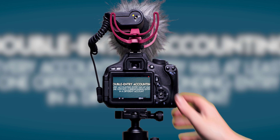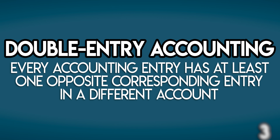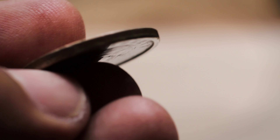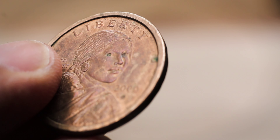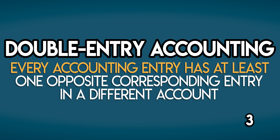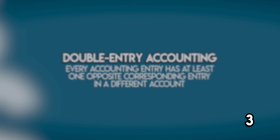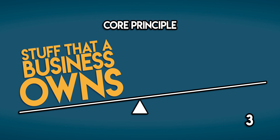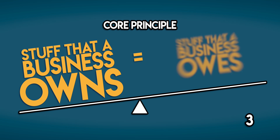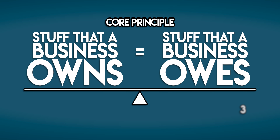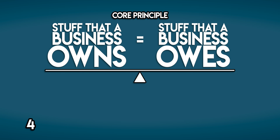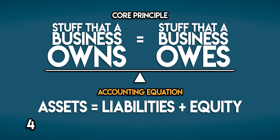A better way to record transactions is to use the double entry accounting method. In double entry accounting, there are two sides to every transaction. This means that each accounting entry has at least one opposite corresponding entry in a different account. Because in double entry accounting, the stuff that a business owns is equal to the stuff that it owes. This leads us nicely into the accounting equation.